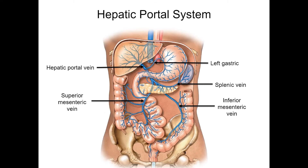This is a depiction of the hepatic portal system, all draining into the hepatic portal vein. We have the left gastric, the splenic, and the inferior and superior mesenteric veins, all draining into the hepatic portal vein. In the liver, this blood will be filtered and drain into the hepatic veins.